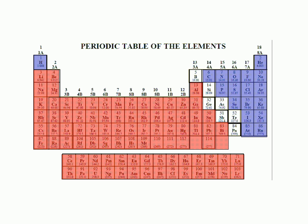Here's potassium — its symbol is K. Here's silicon — its symbol is Si. Here's iron — its symbol is Fe. And here's helium — its symbol is He.